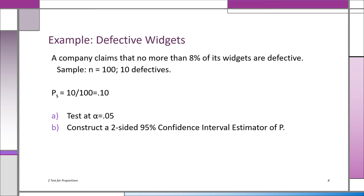Here's a problem with defective widgets — a one-tail test. The company claims that no more than 8% of its widgets are defective. You hear the word 'no more' — that's a clue, it's going to be a one-tail test. You take a sample of 100 and find 10 defective. So ps is 10 over 100, or 0.10. The claim was 8%. Now we're going to test the claim at an alpha of 0.05.